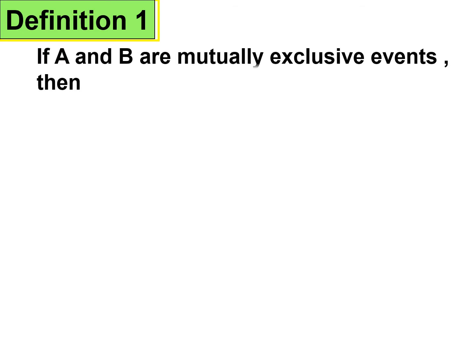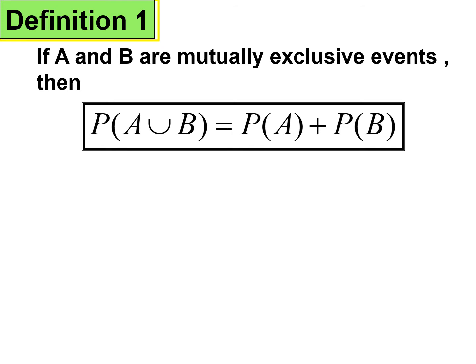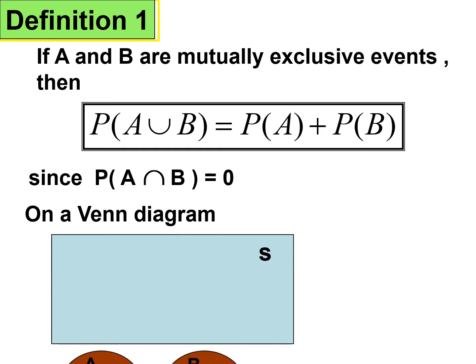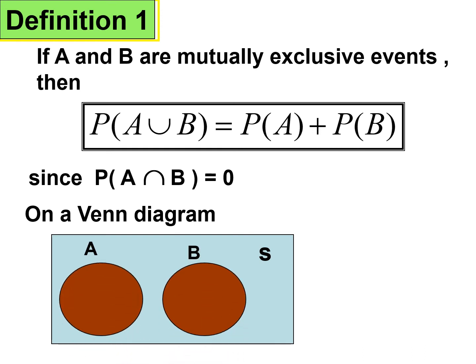Definition 1: If A and B are mutually exclusive events, then P(A ∪ B) equals P(A) plus P(B). Since the intersection of these two events is 0, the probability of the intersection is also 0. On a Venn diagram, with two sets A and B, there is no intersection.